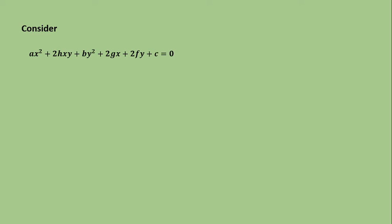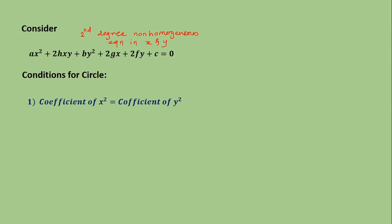Consider the equation ax square plus 2hxy plus by square plus 2gx plus 2fy plus c is equal to 0. This equation is called a second-degree non-homogeneous equation in x and y. We are trying to understand when such an equation represents a circle. The first condition is that the coefficient of x square must be equal to the coefficient of y square — that is, a must equal b.